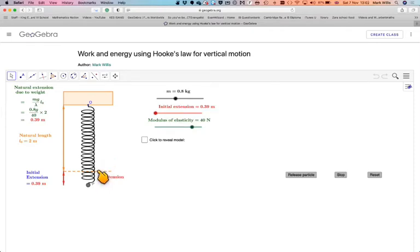The natural length of the spring is actually 2, so it's actually been pulled at a further 0.39 metres. And we have a modulus of the elasticity of 40 newtons.